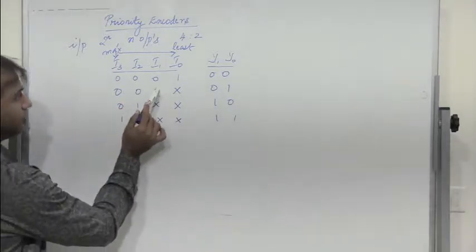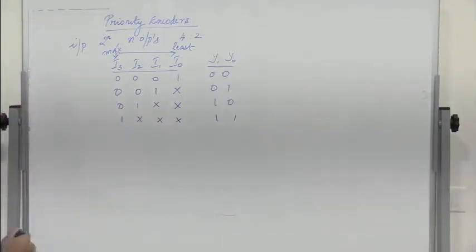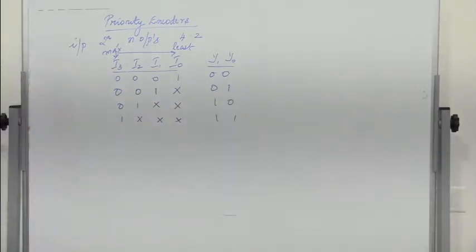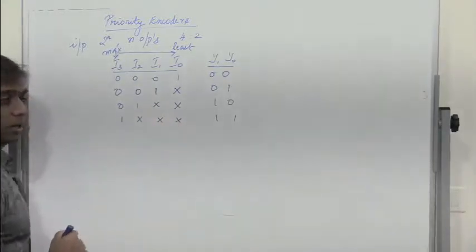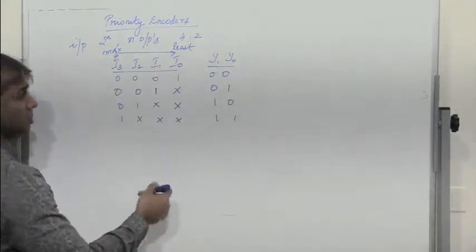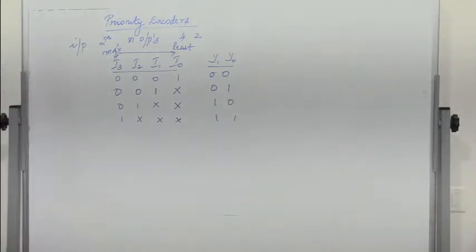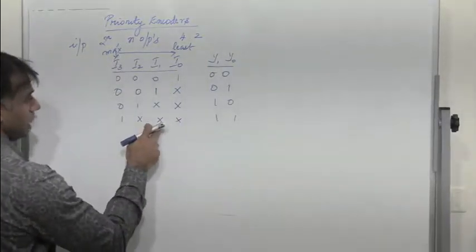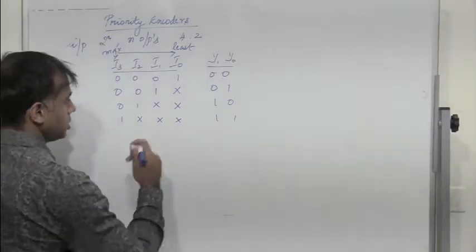If information is received on i1 with i3 being 0, irrespective of i0, the output is 0,1. If information is received on i2 with i3 being 0 and i0 and i1 being immaterial, the output is 1,0. If information is received on i3, which has the highest priority, then i2, i1, and i0 are not considered and the output is 1,1.